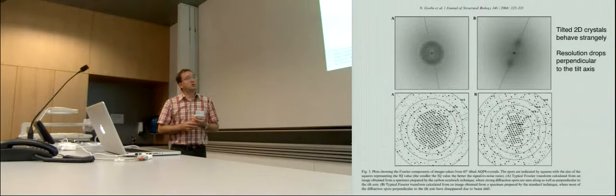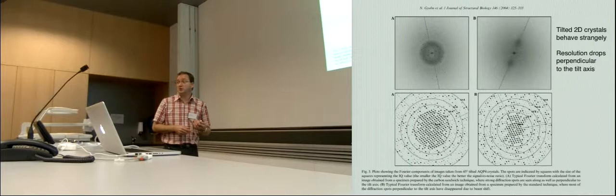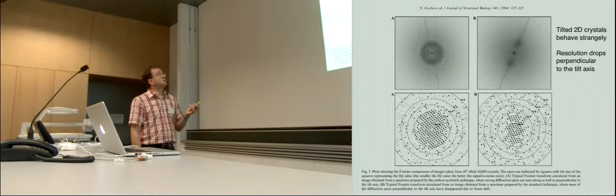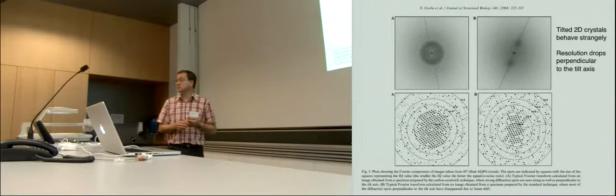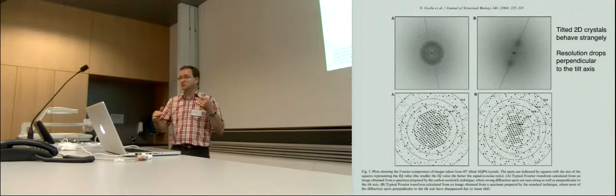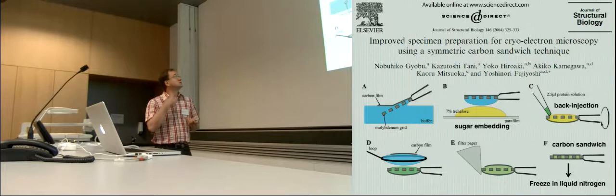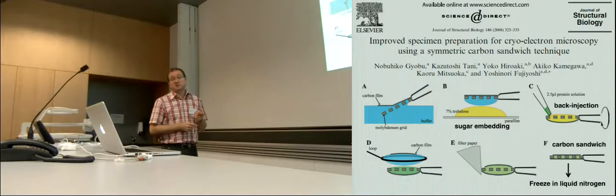Also, once you start to tilt your sample, you notice that they behave strangely. And this is from Gyobu et al. You see that the tilted at 45 degrees show a loss of resolution perpendicular to the tilt axis. And it is thought that it is mainly due to charging and drift. And they describe in that paper that there could be an improved preparation of the cryo-electron grid to help.